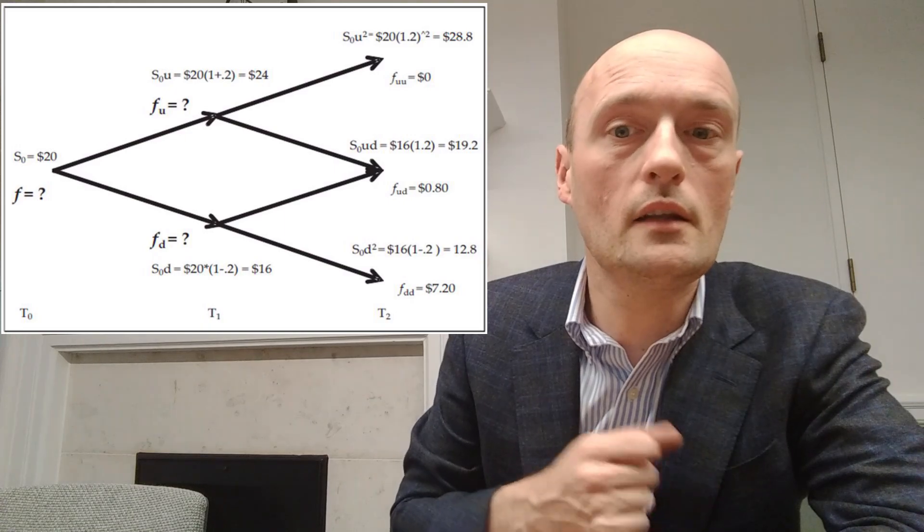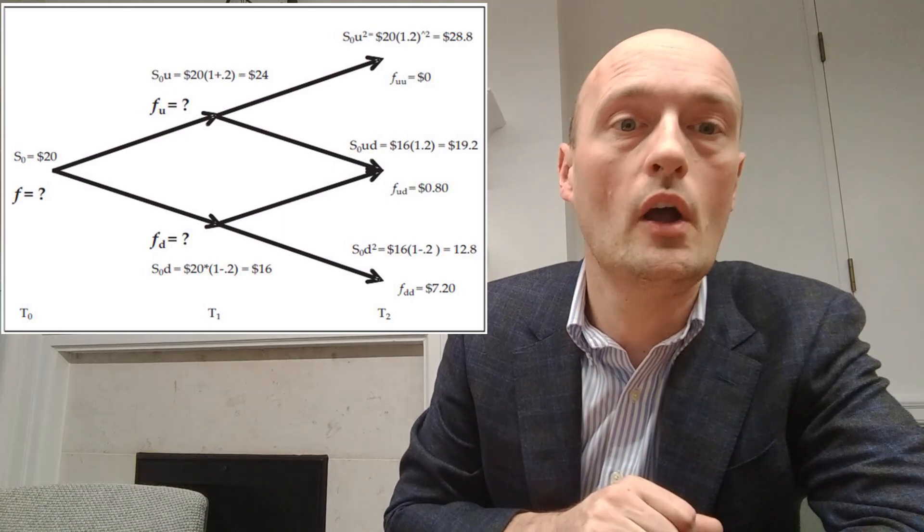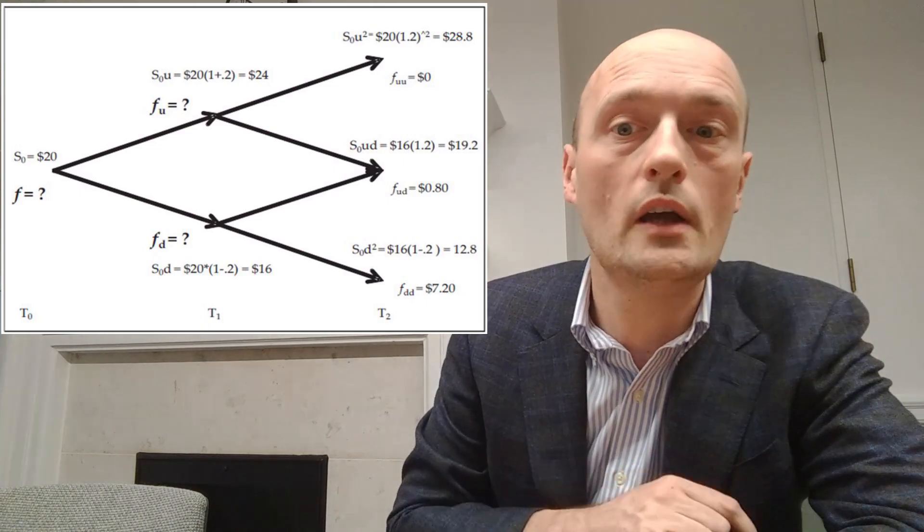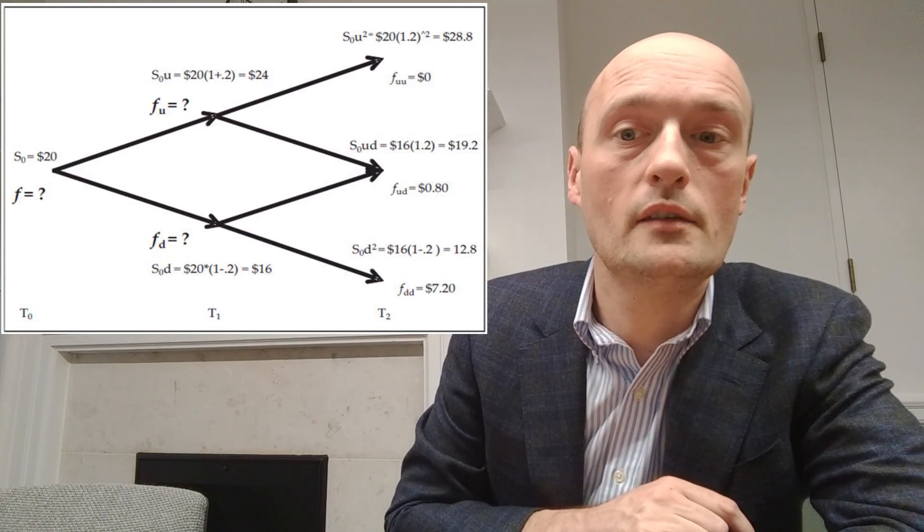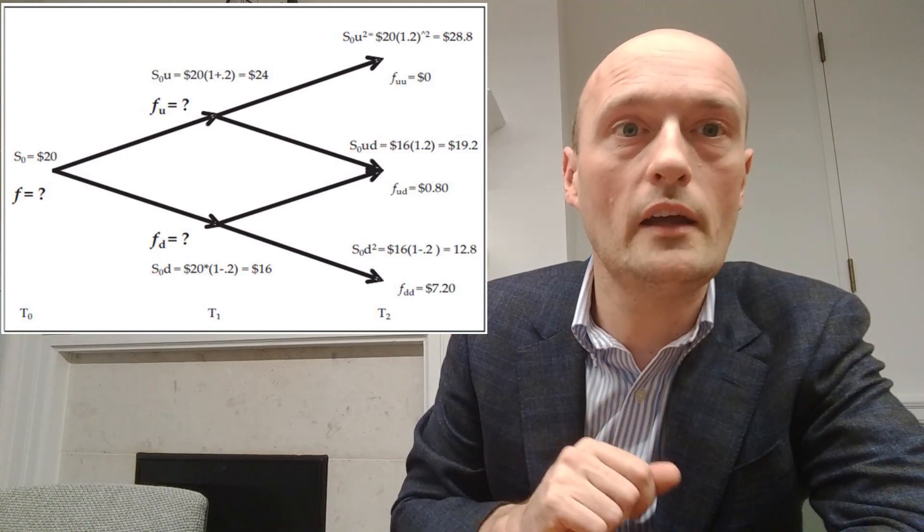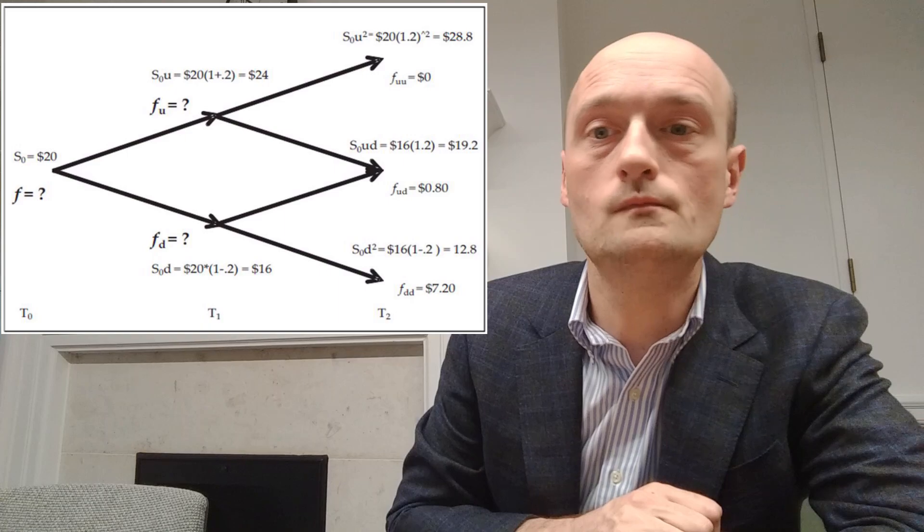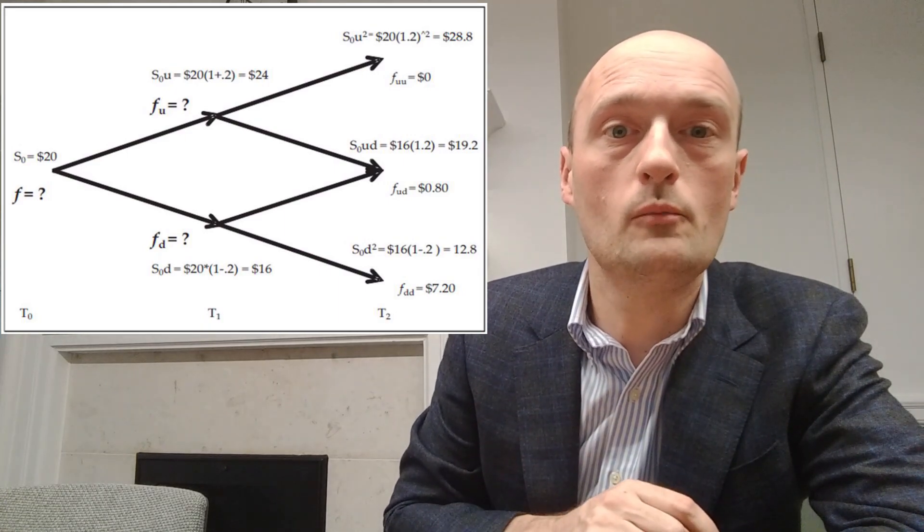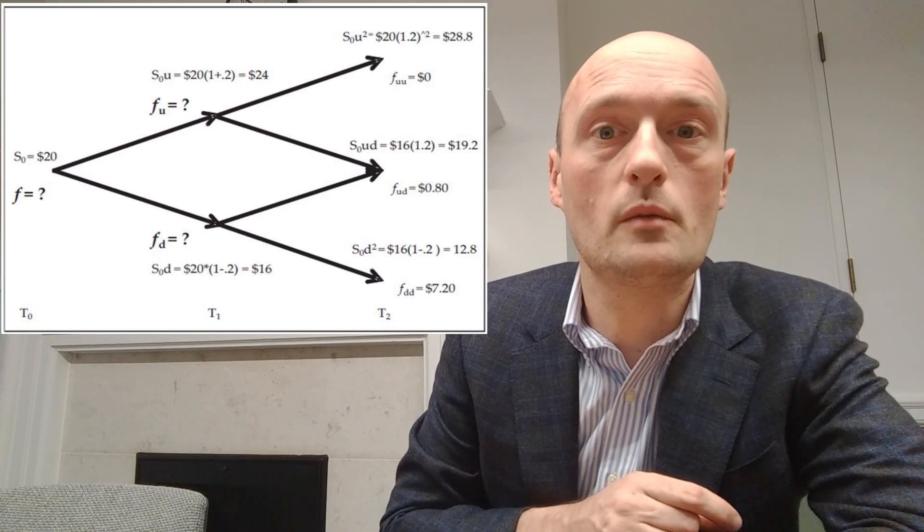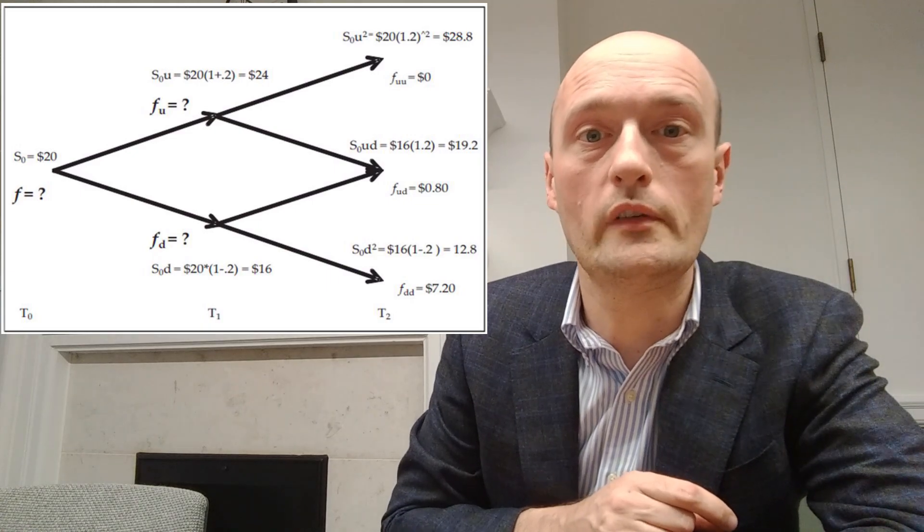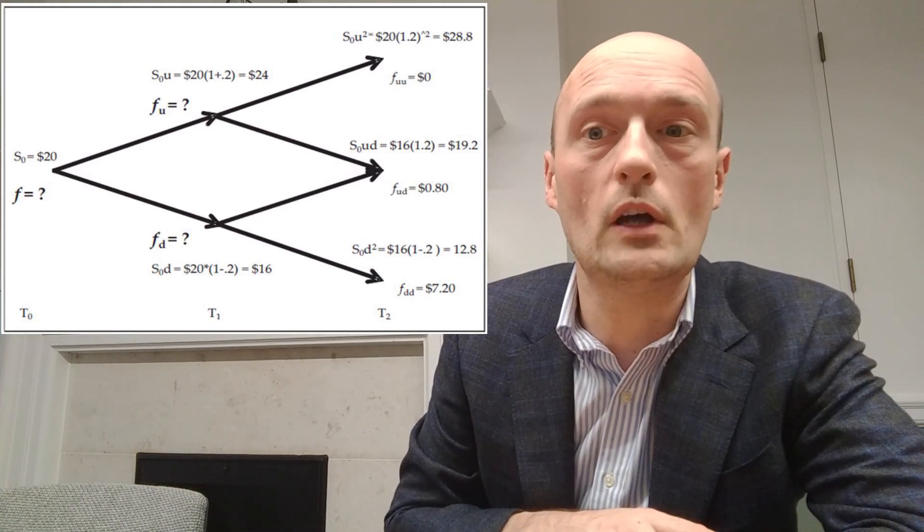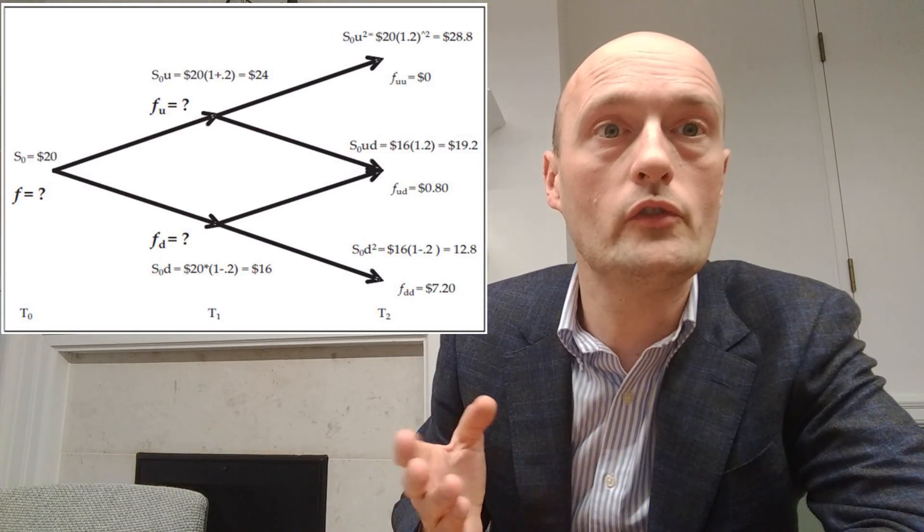And then let's calculate the down and the down down node. So 20 times 0.8 gives us $16, so we write that at the down node. And then 16 times 0.8 gives us 12.8, so we write that in again. Now for the middle node, we can call that either the up down or the down up node. You take 20 and you multiply it by 1.2 and then by 0.8, or you can multiply it by 0.8 and then by 1.2. Either way you'll come to the same number which is 19.2, and so that's the price of the underlying in the middle scenario.